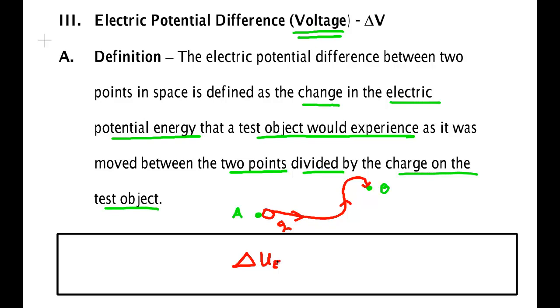That is the negative of the work done by the electric force. But the value that we get depends on this value of the test charge. So in order to eliminate that, we divide by Q. We call this quantity the change in electrical potential or the change in voltage.